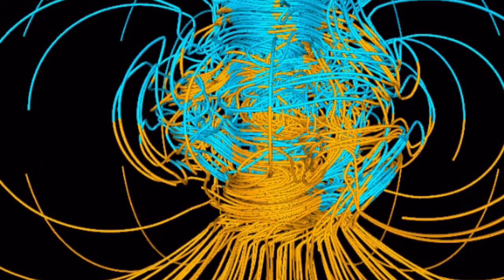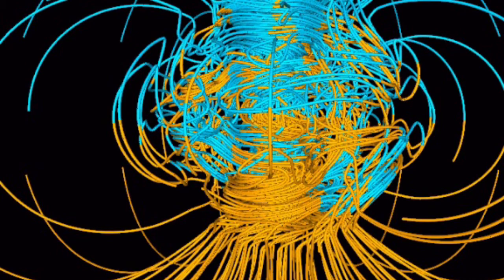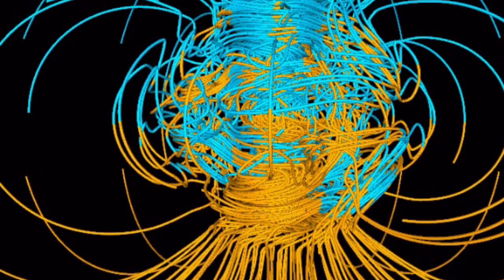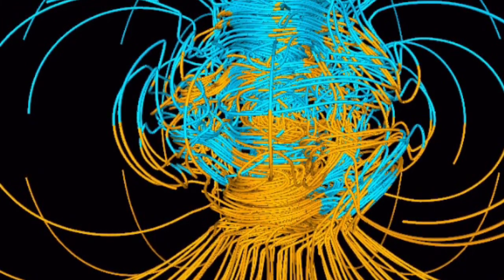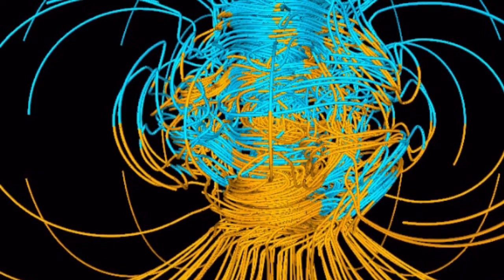We never see it, but the Earth's magnetic field is one of the things that allow life to thrive on our planet. It protects us from some of the harsher aspects of orbiting a star like our sun, and researchers are constantly monitoring its status and doing their best to understand what affects it.